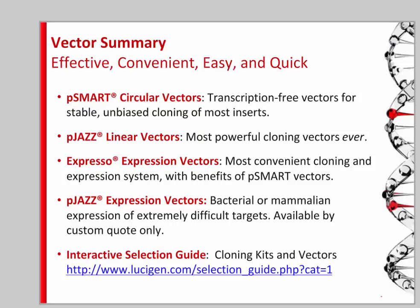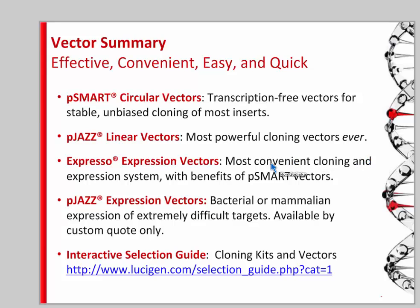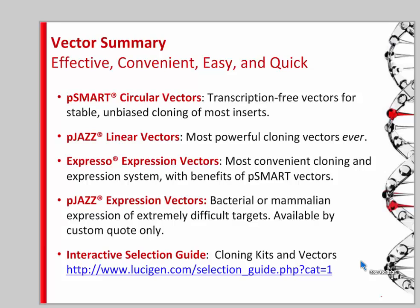Summary: for bacterial cloning, P-Smart vectors work for almost all cases, and where they don't, pJAS vectors will. We haven't seen anything that can't be cloned — perhaps the only exception was several KB of a poly-G stretch, likely due to structural problems with poly-G. The Expresso vectors are for bacterial expression — extremely convenient, easy to clone, with all the P-Smart benefits. PJAS expression vectors for mammalian or bacterial expression are available by custom quote. On our website, a vector selector guide lets you click different options to find which product will do the job best for you.